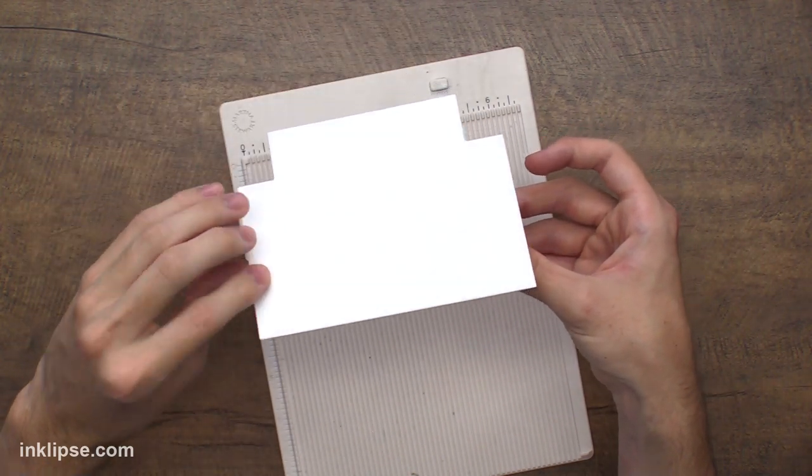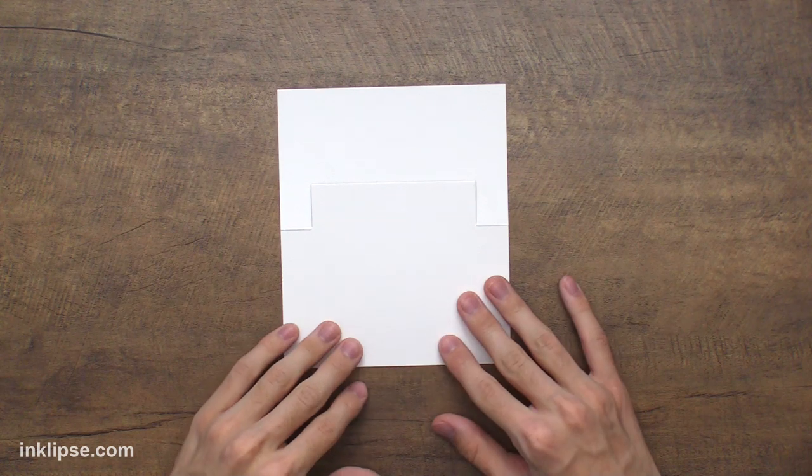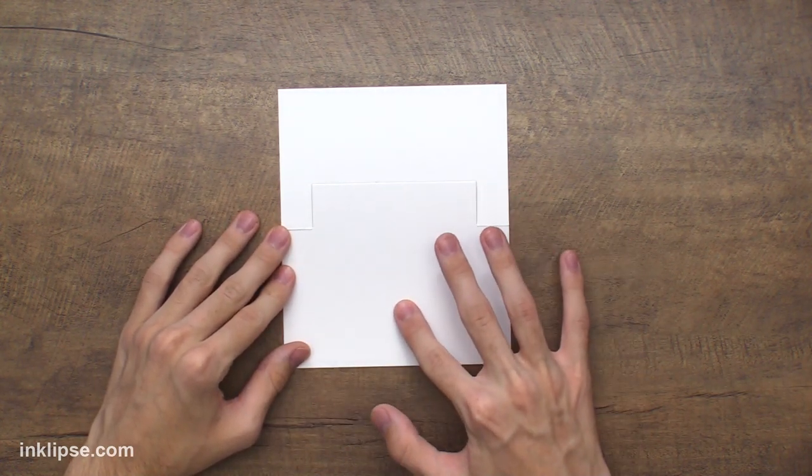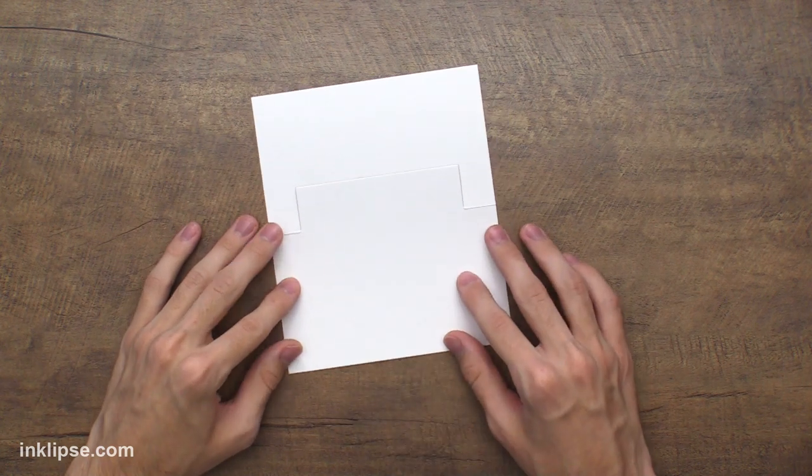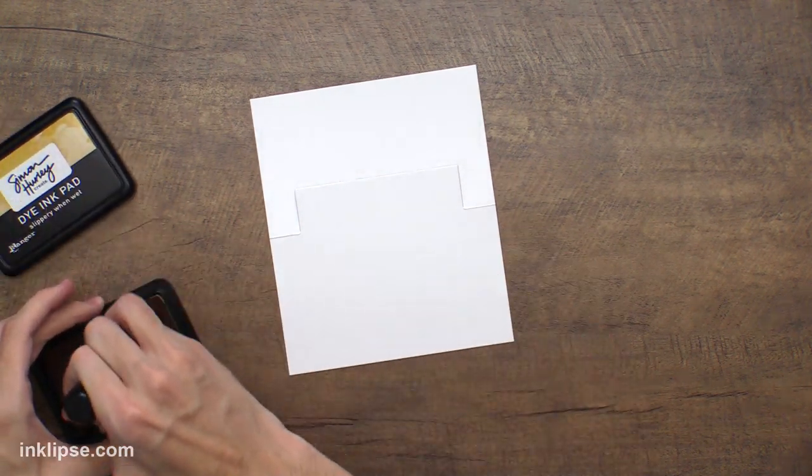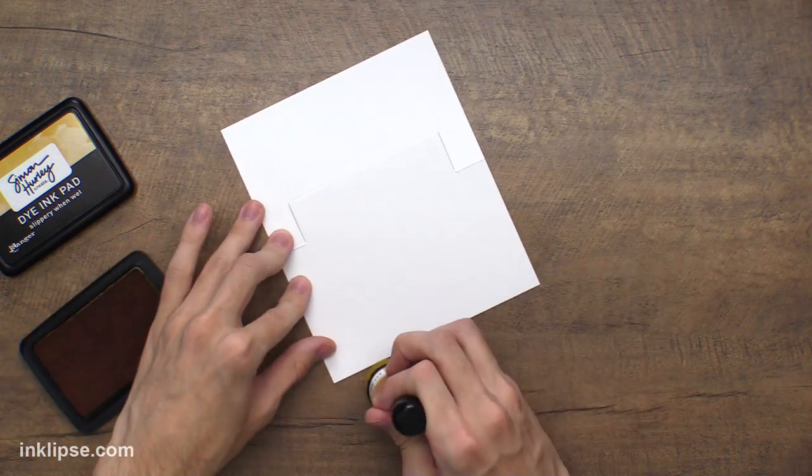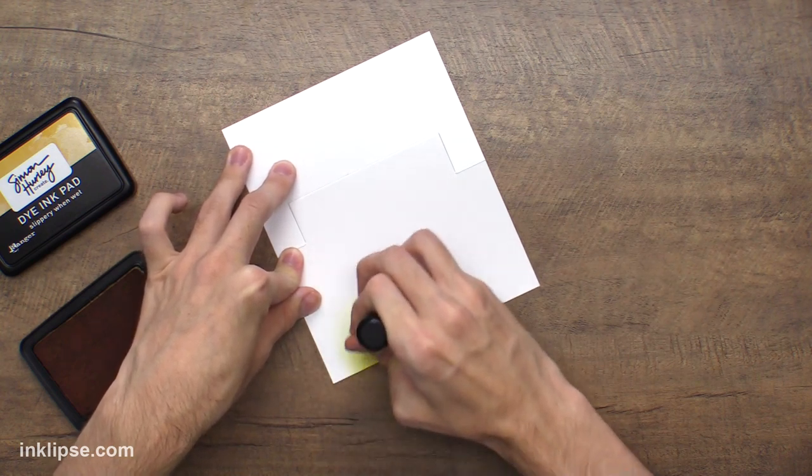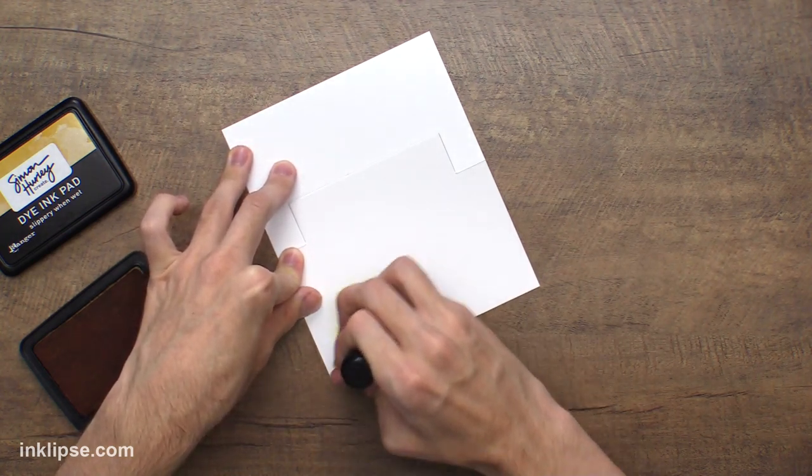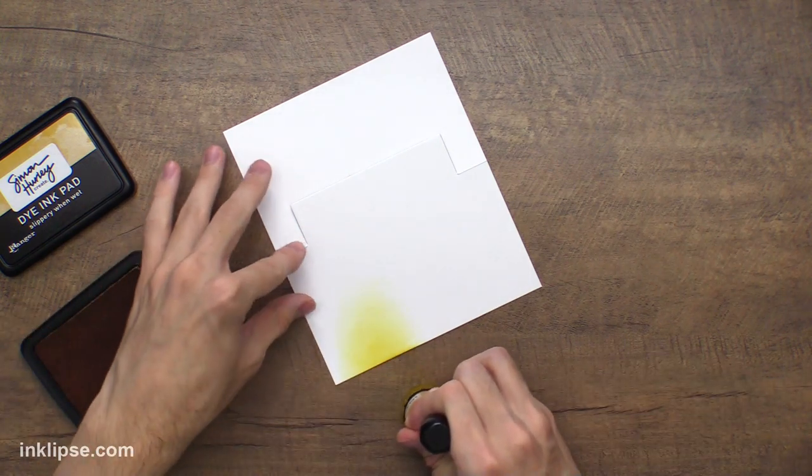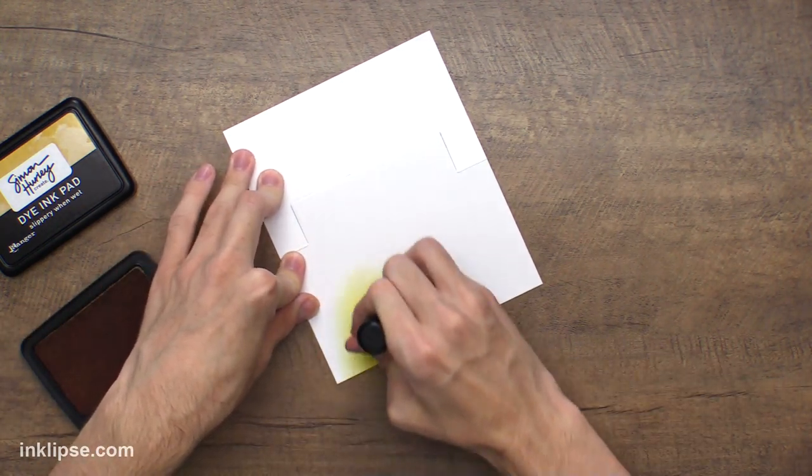For the front of this, I'm going to do a little bit of ink blending. I want to put a dude right here on the card. I'm going to start out with a little bit of Slippery When Wet, which is that bright yellow color. I'm going to start off the cardstock and just fade it in, bring it on the card, and then fade it out to white near the top.